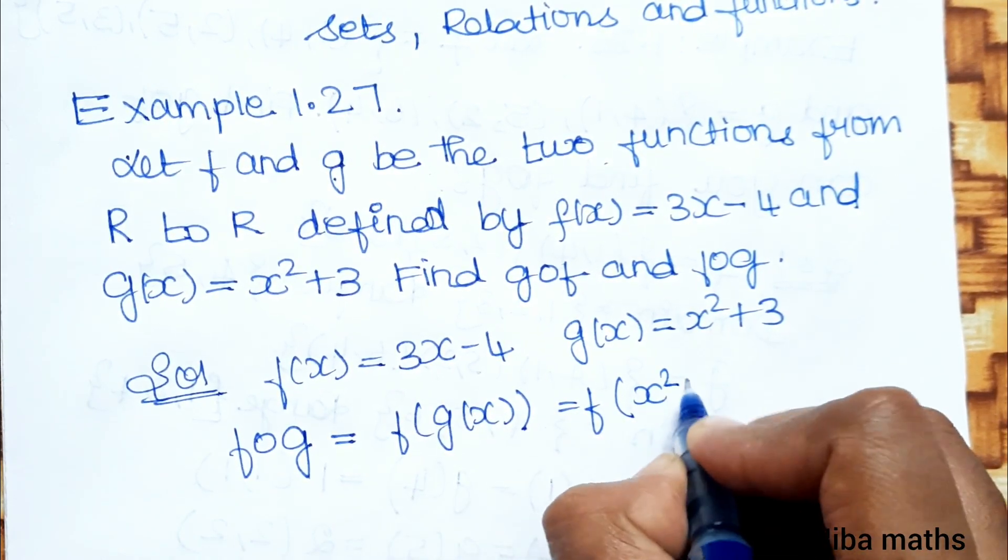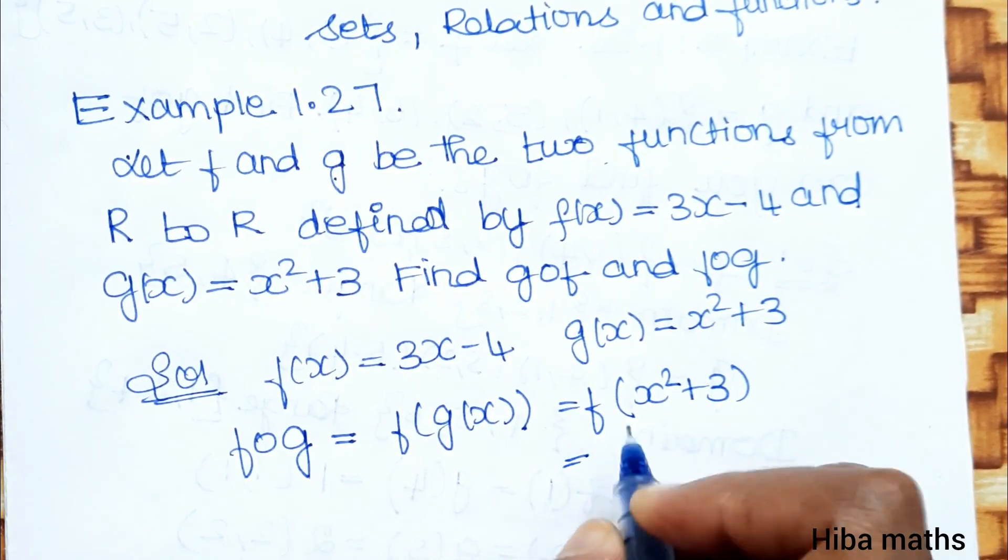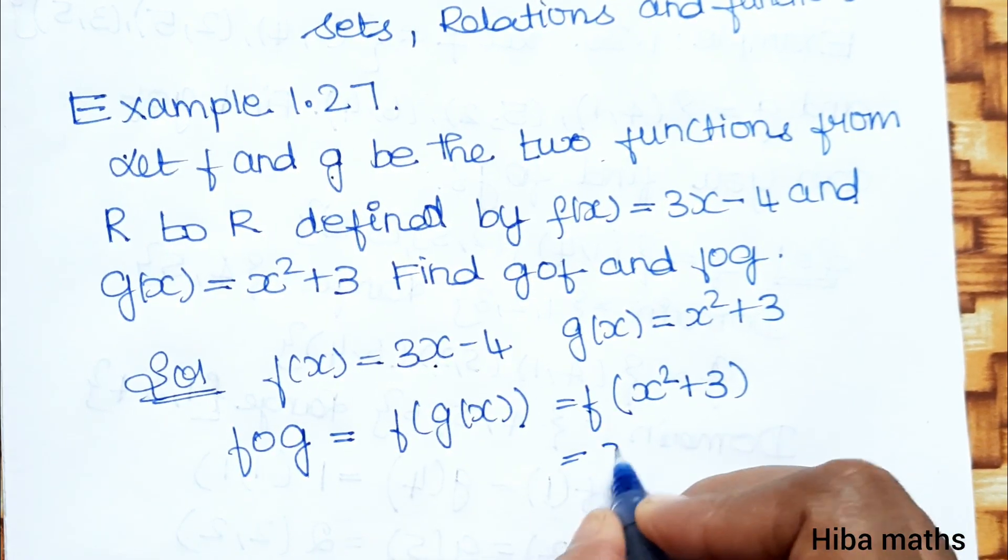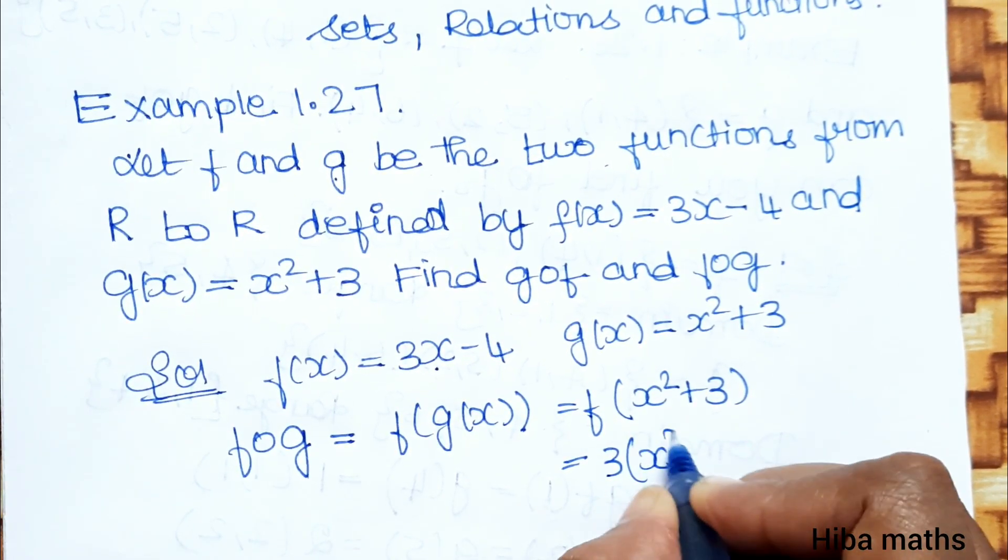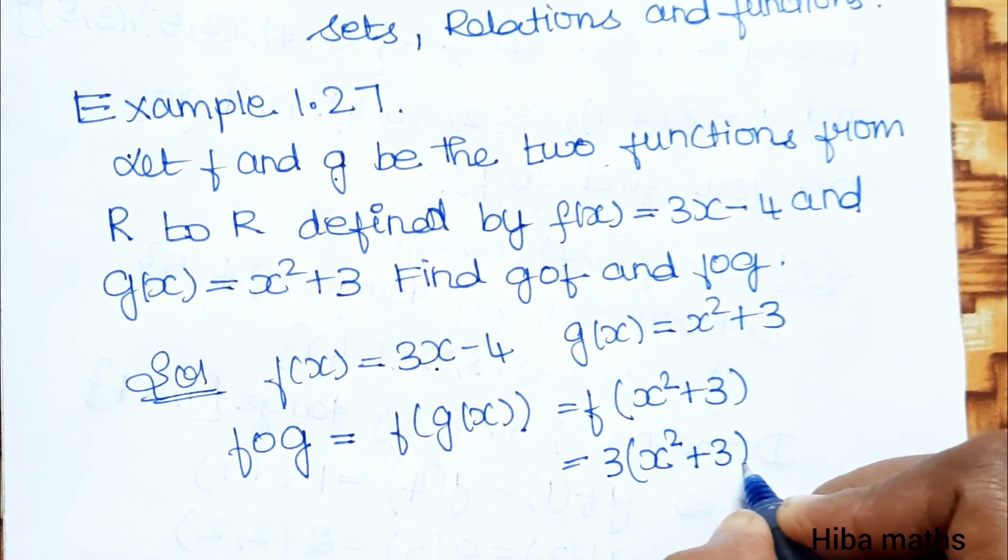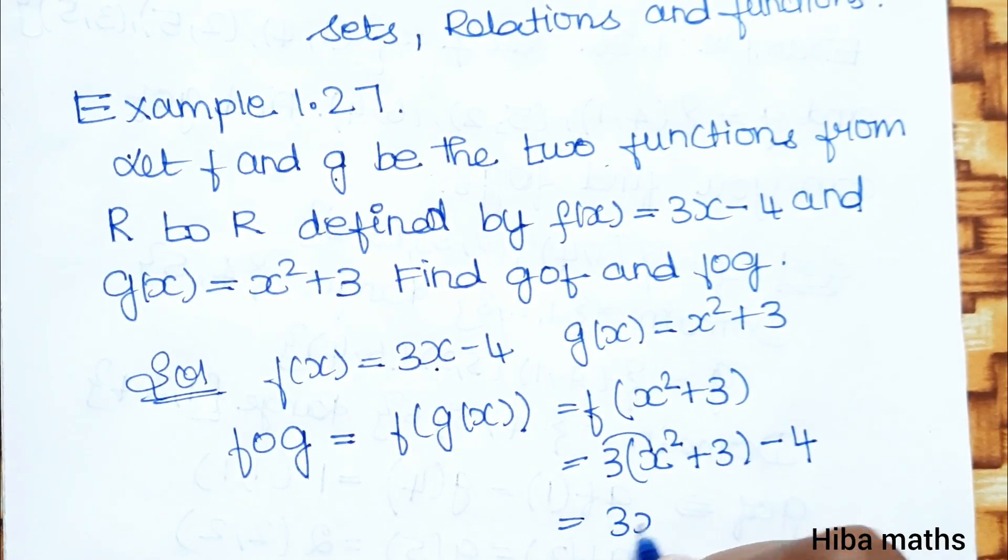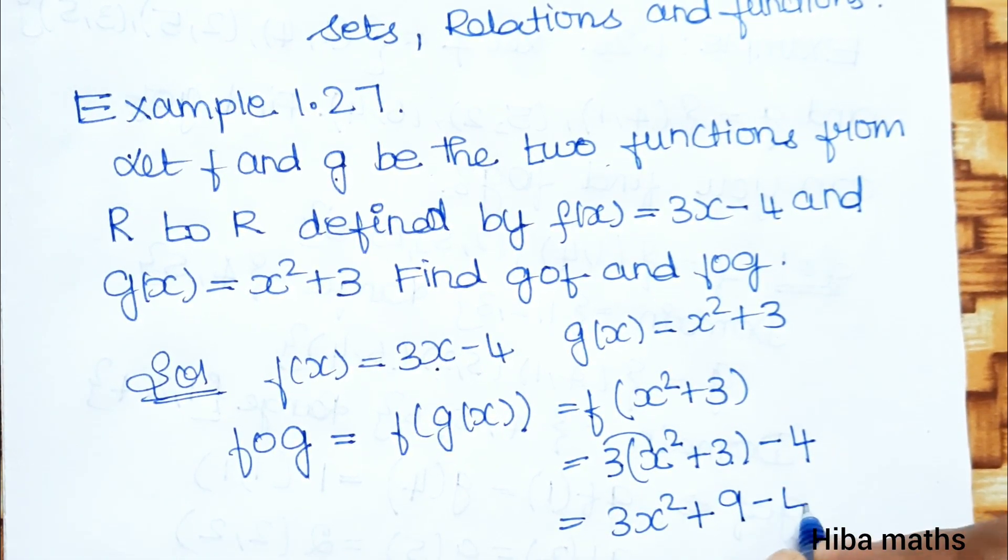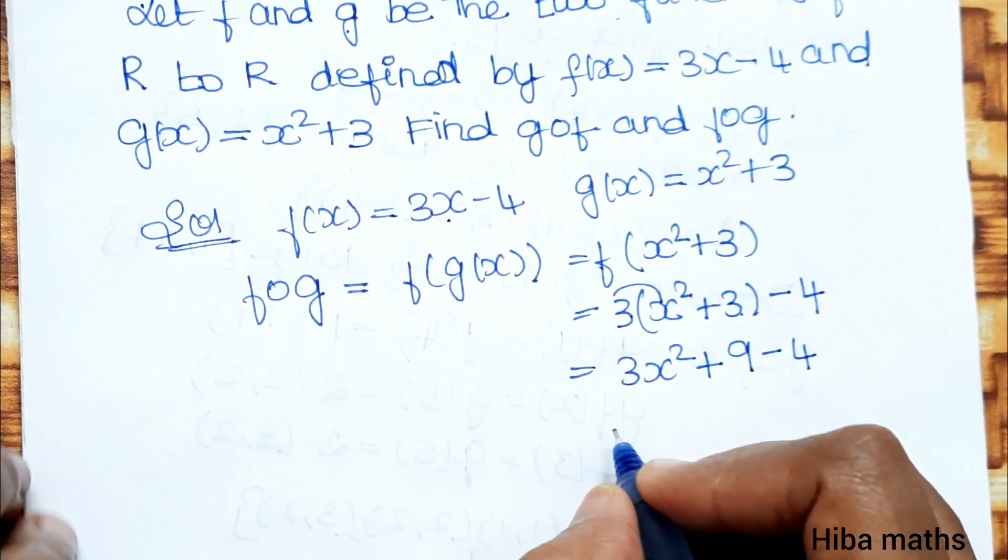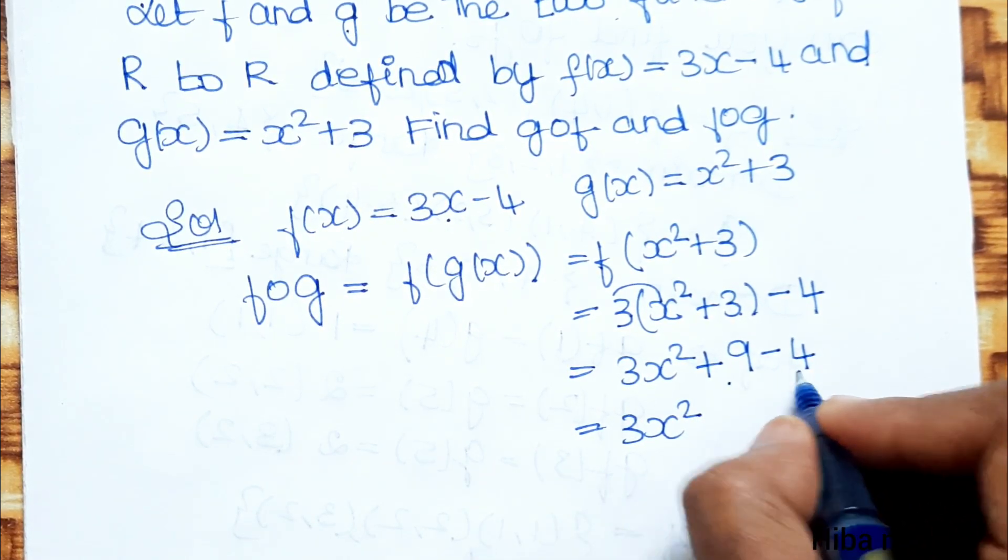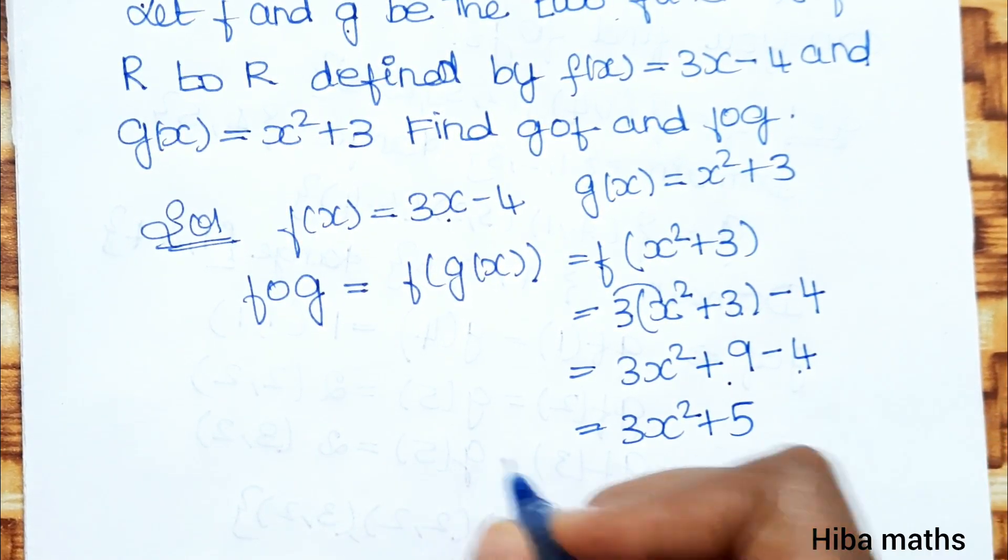So f(x square plus 3) equals 3 times (x square plus 3) minus 4, which gives us 3x square plus 9 minus 4. That equals 3x square plus 5. This is the value of f of g.